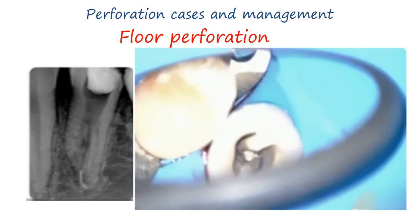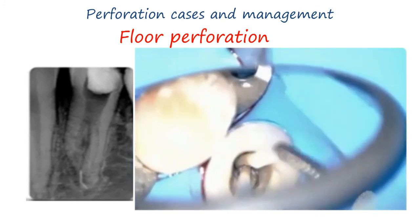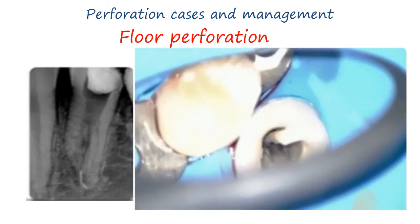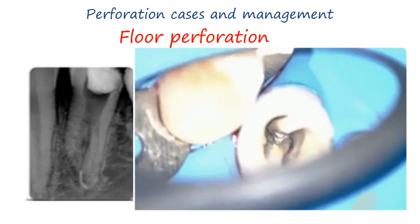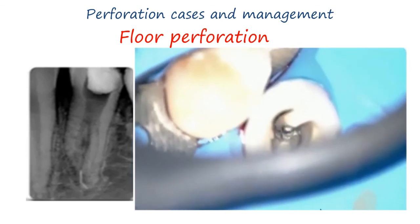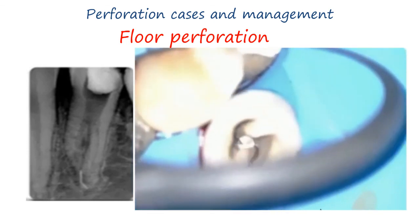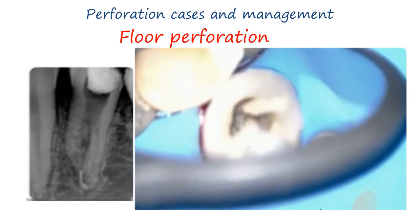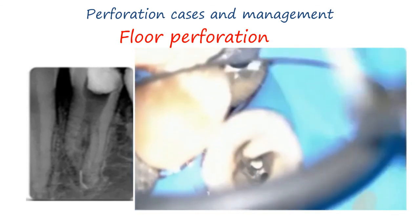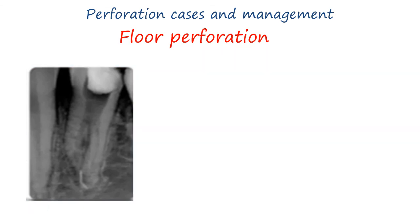Start applying MTA using the MAP system, then using a paper point or plugger, gently compact or adapt the material. Now you are ready to remove the paper point from the canal. Place cotton pellets in temporary filling, and at the next visit confirm MTA has set, then obturate the lateral canal perforation.